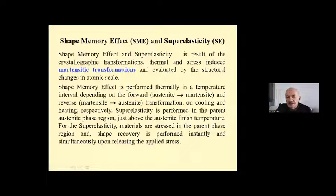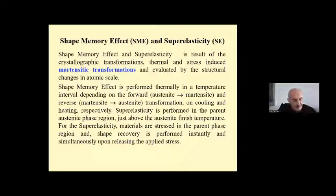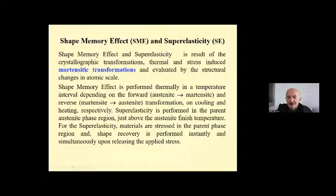Shape memory effect and superelasticity are the result of crystallographic transformations — thermal and stress-induced martensitic transformations — and are evaluated by the structural change at the atomic level. Shape memory effect is performed thermally in a temperature interval depending on the forward austenite-to-martensite and reverse martensite-to-austenite transformation on cooling and heating. For superelasticity, materials are stressed in the parent austenite phase region and shape recovery is performed instantly and simultaneously upon releasing the applied stress.